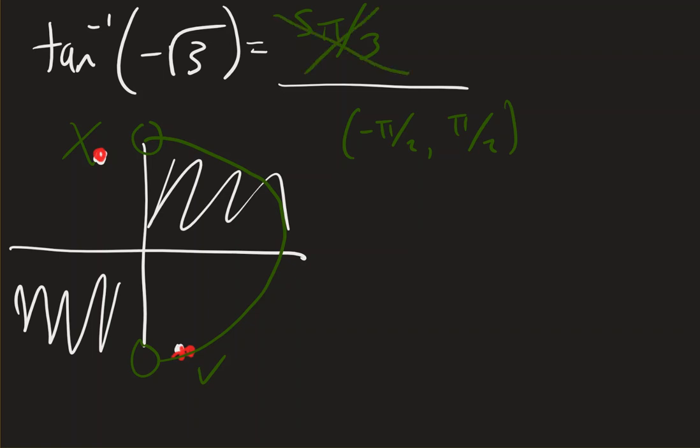You need to make sure that you see that that's not the answer. That's the location of your answer, but your answer has to be between these two values. 5 pi over 3 is bigger than 1 half pi. You need an answer between these.